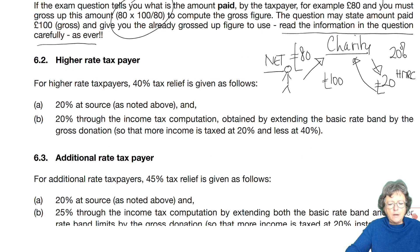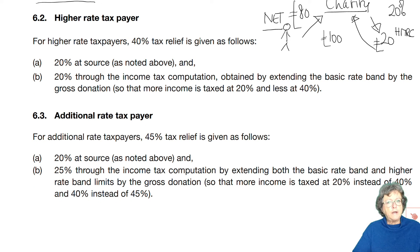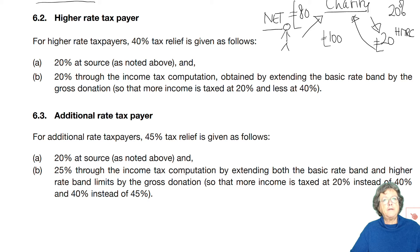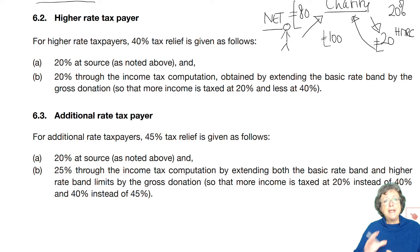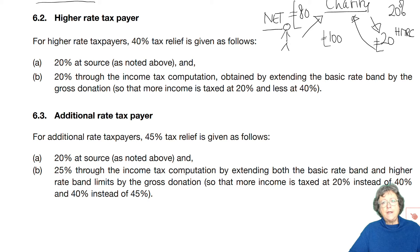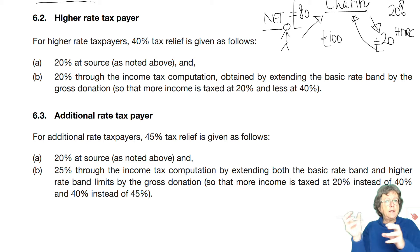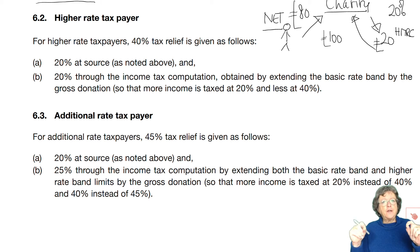If you are a higher rate taxpayer or an additional rate taxpayer, then you need to get additional tax relief for that payment made under the Gift Aid scheme. For a higher rate taxpayer you would expect relief at 40%. You're getting 20% at source automatically. The extra 20% comes through the income tax calculation — it extends the basic rate band.